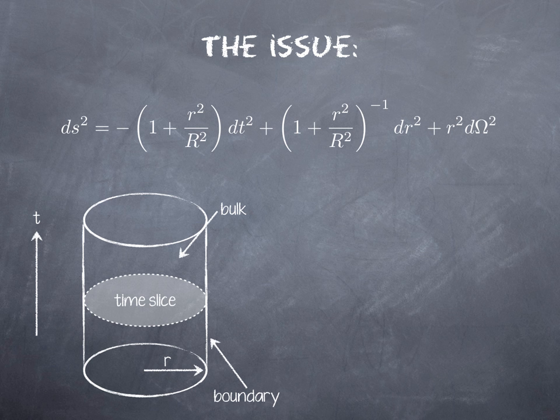It has a time direction which is going upward, it has a radial direction which is going to the right, it has a bulk which is the interior of the cylinder and it comes with a boundary, in particular a time-like boundary.